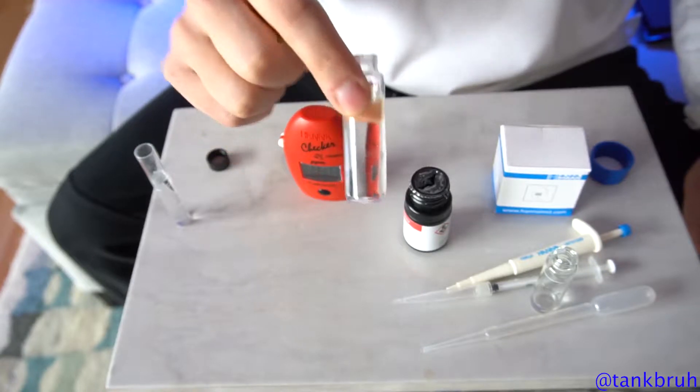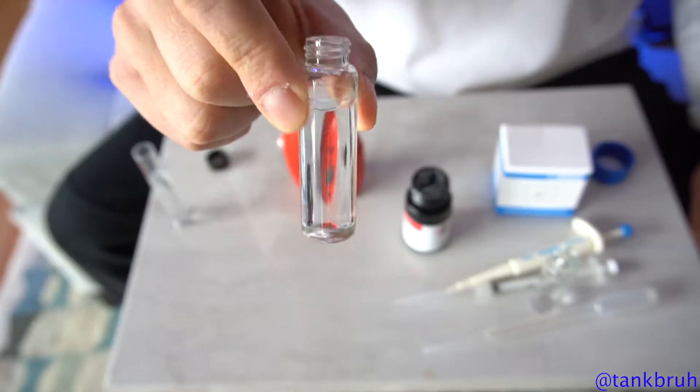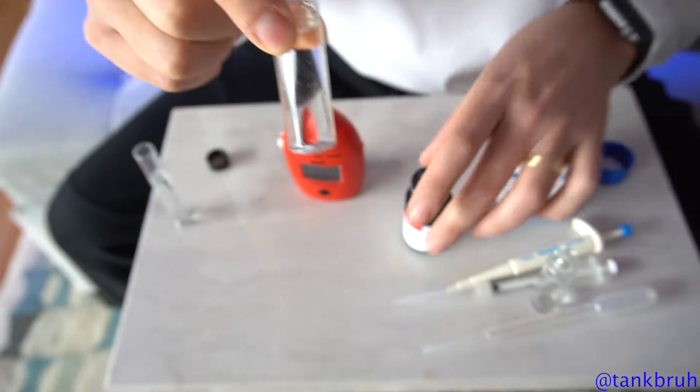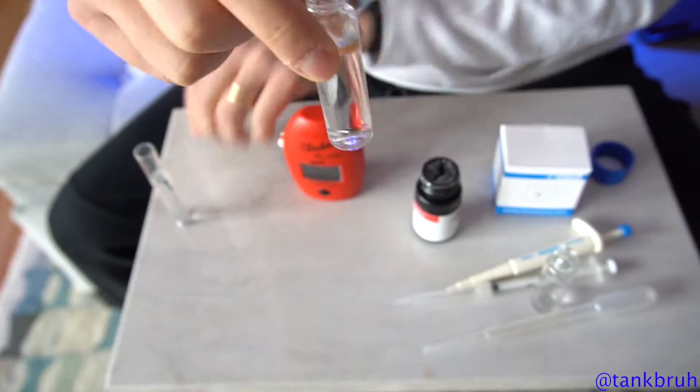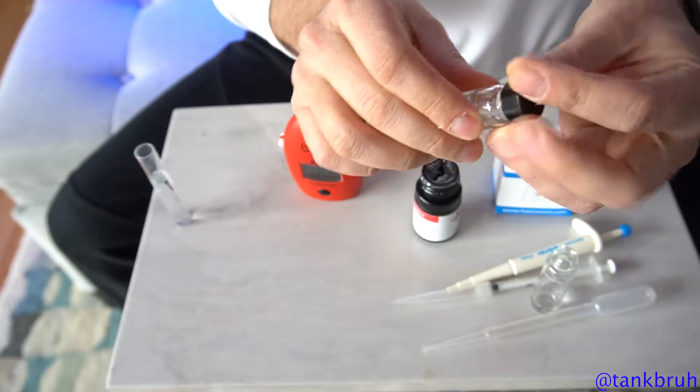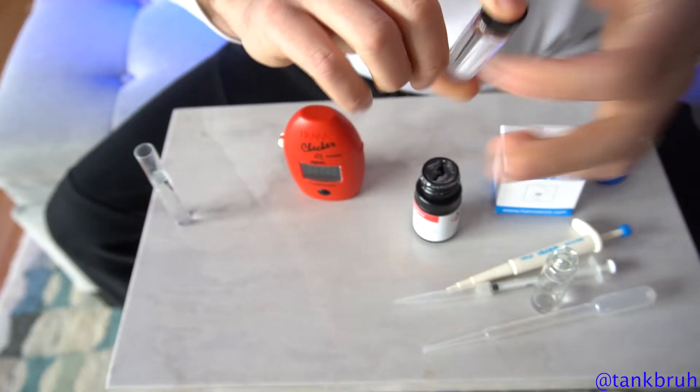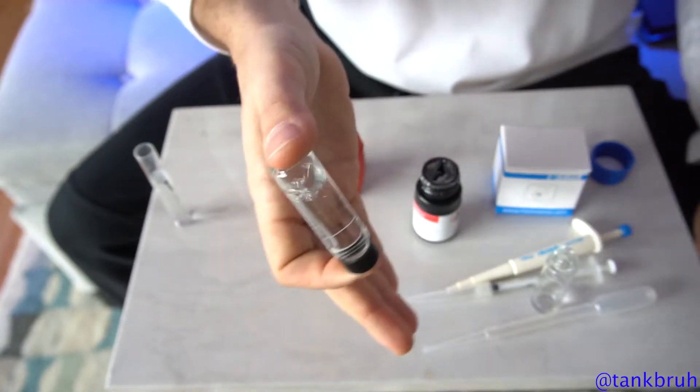So now we have our test tube filled with the reagent A, one milliliter of the reagent A, and the rest topped off with RO water. Now what we're gonna do is cap it and invert it a few times. We want to get it kind of mixed in together.